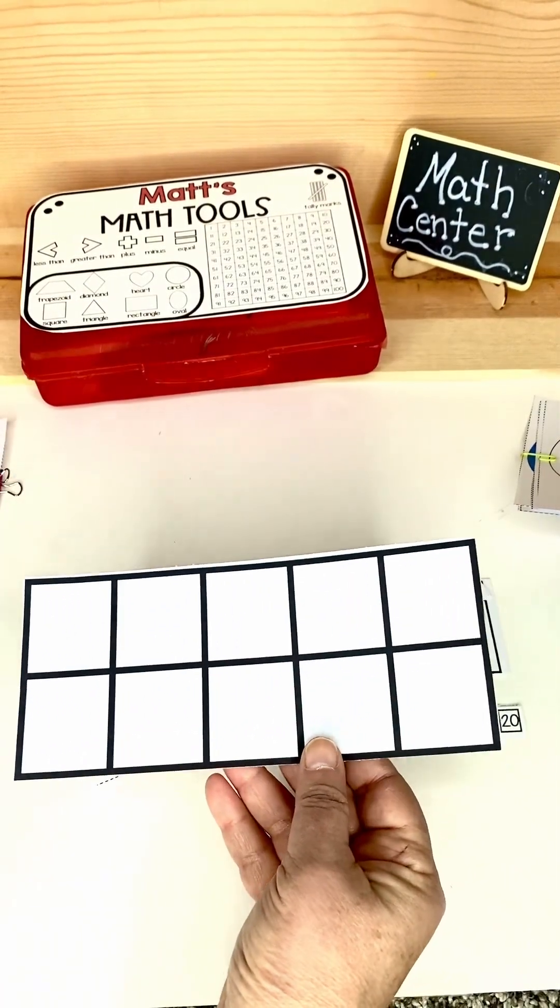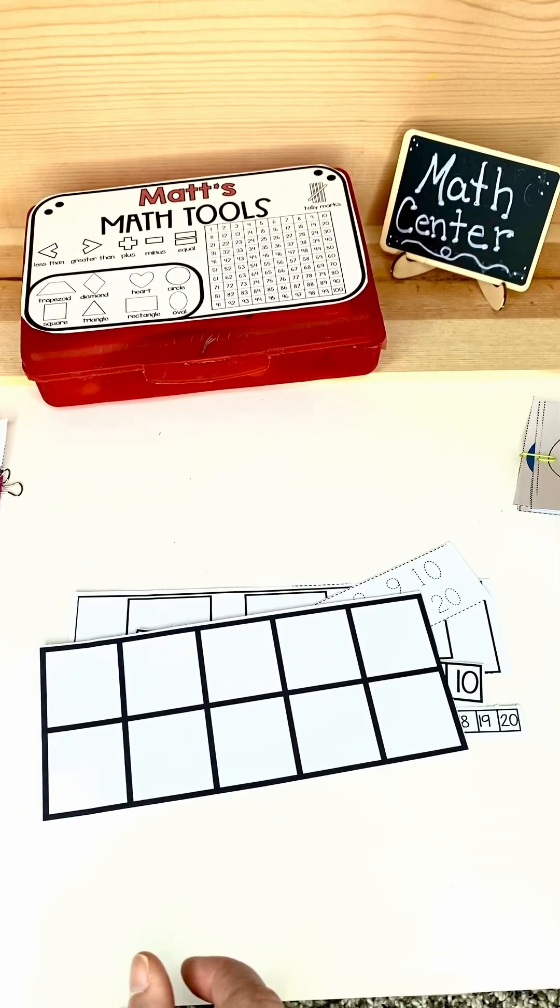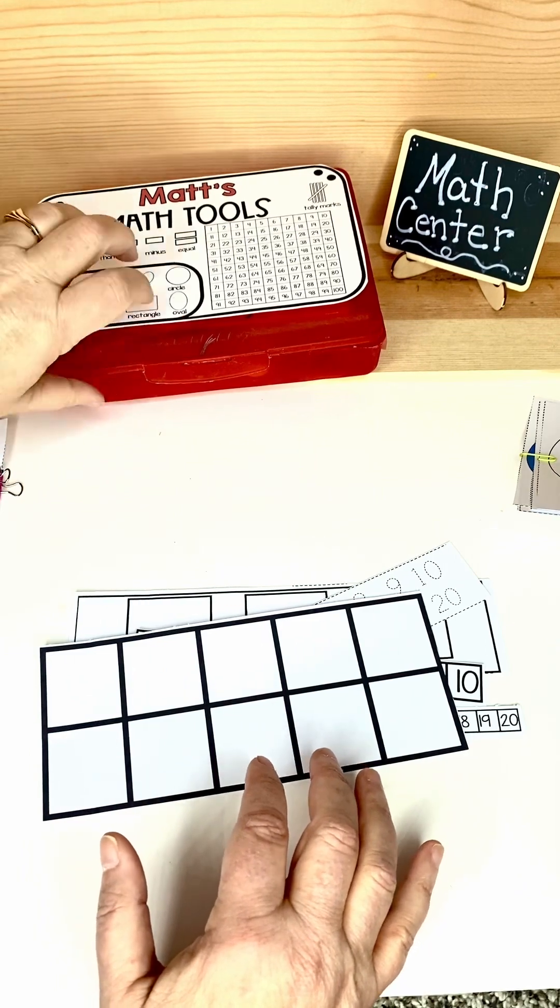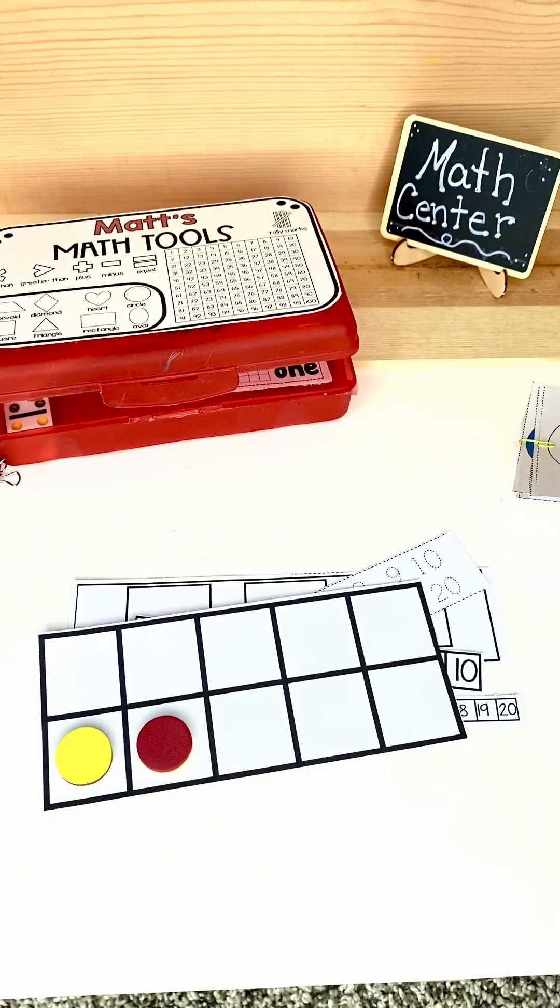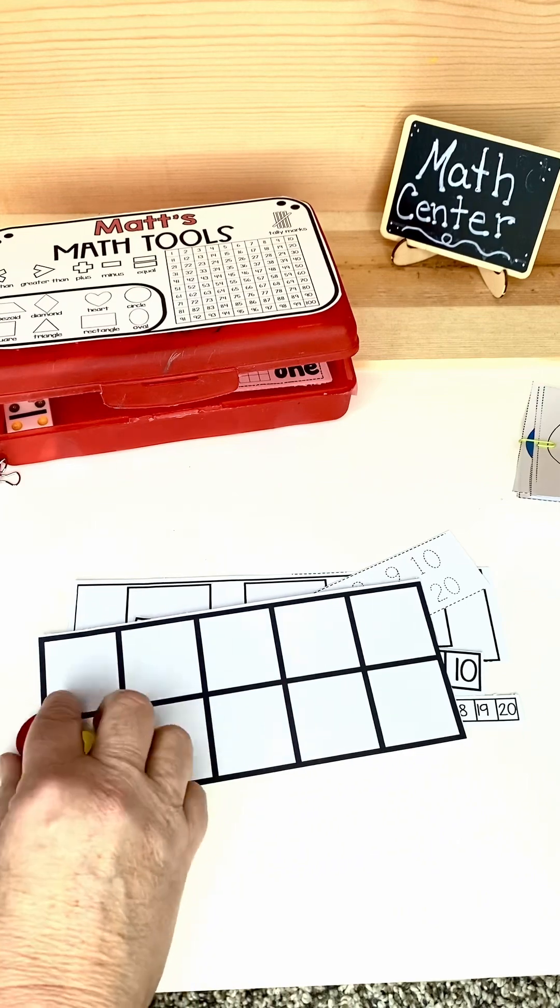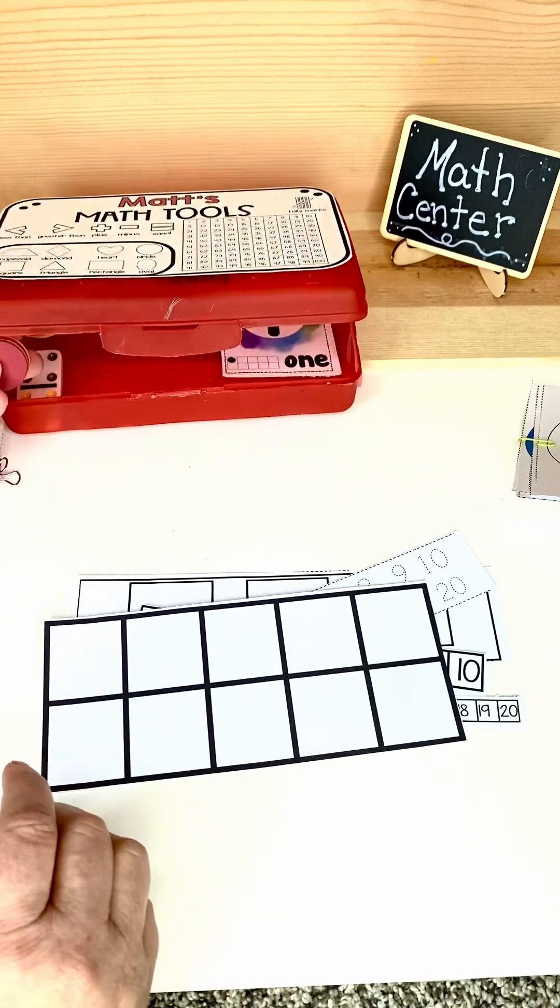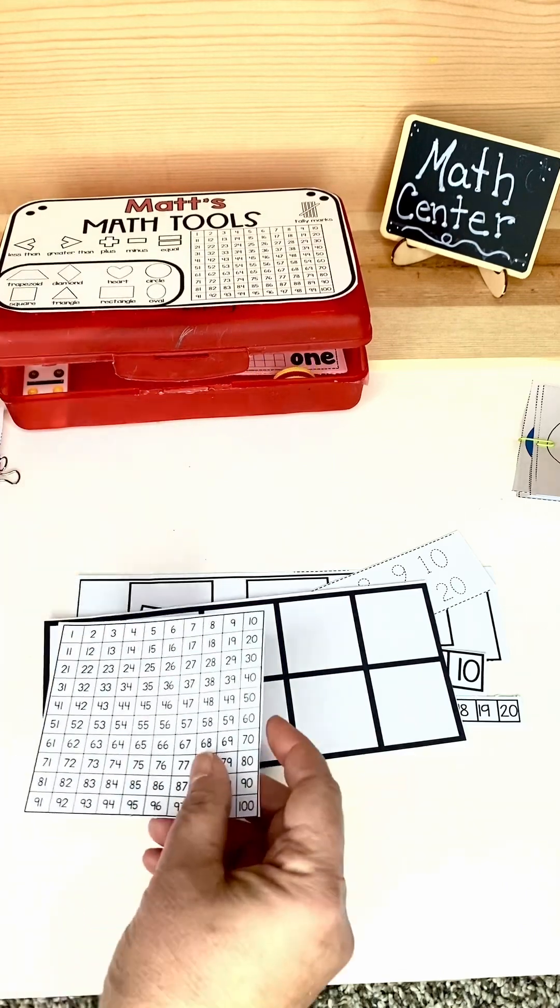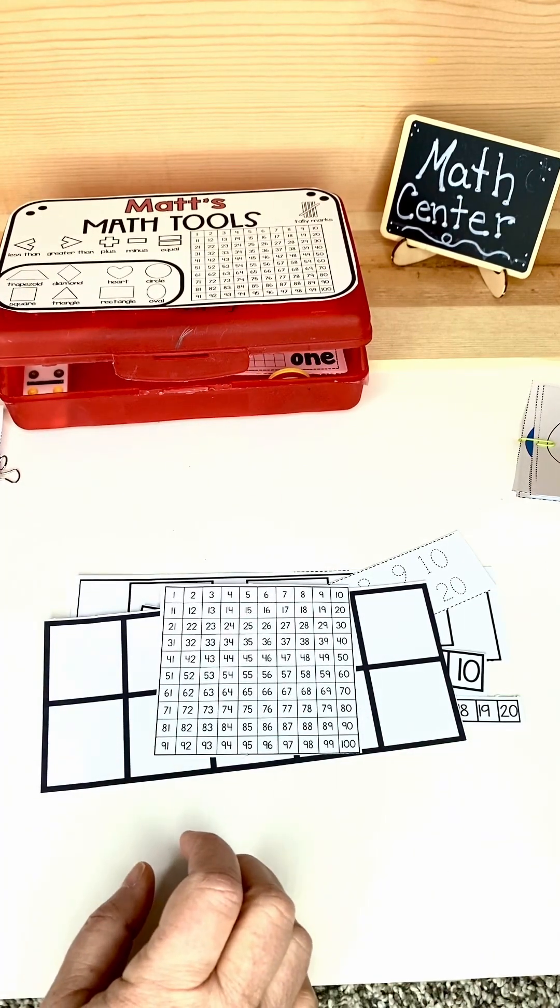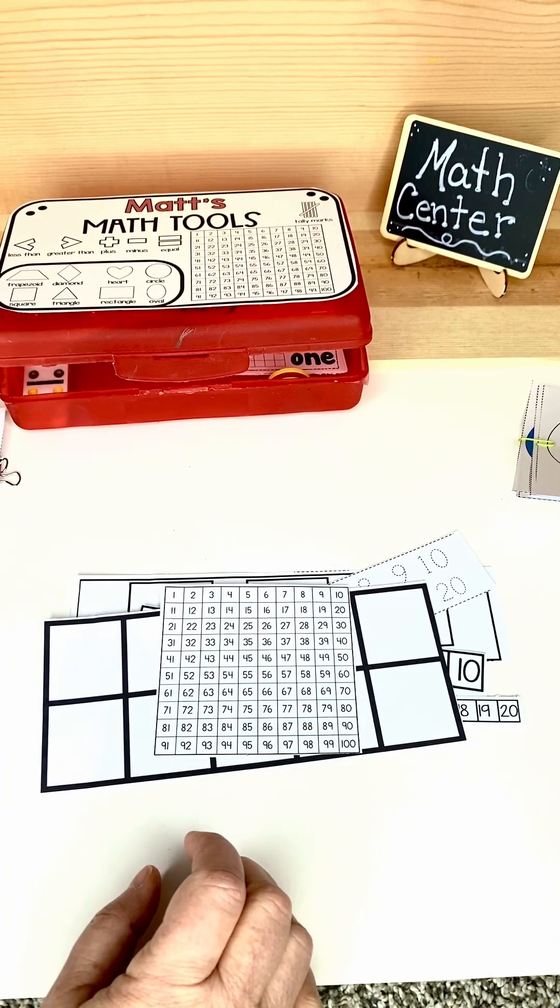Here is a 10 frame that the students can put their different objects on. These also come printable if you don't have these counters in your classroom. There is a numbers chart to 100.